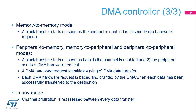In memory-to-memory mode, a block transfer starts as soon as the channel is enabled. In peripheral-to-memory, memory-to-peripheral, and peripheral-to-peripheral modes, a block transfer starts as soon as both the channel is enabled and the peripheral sends a DMA hardware request. A DMA hardware request identifies a single DMA data transfer, paced and granted by the DMA when each data is successfully transferred. In peripheral-to-peripheral mode, the hardware request from a peripheral triggers the DMA channel, pacing the data transfer to or from a register of another memory-mapped peripheral not configured in DMA mode.